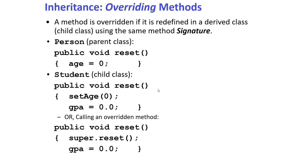In this example we created two derived classes for Person: Student and Employee. Let's look at Student only. Just as you wrote a reset method for the parent class Person, you can also write a version of reset in the child class Student. At the level of Student, you have one more data member, GPA, which is an additional property of the Student class.